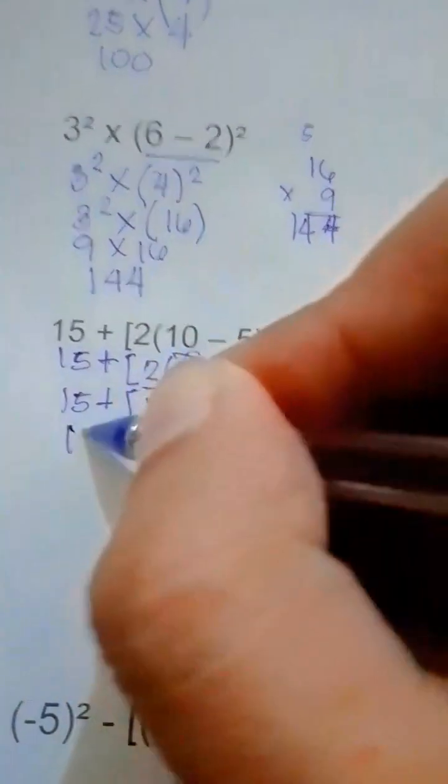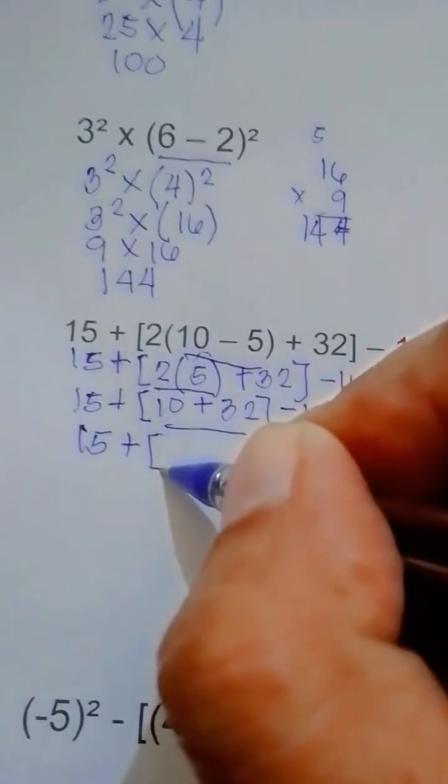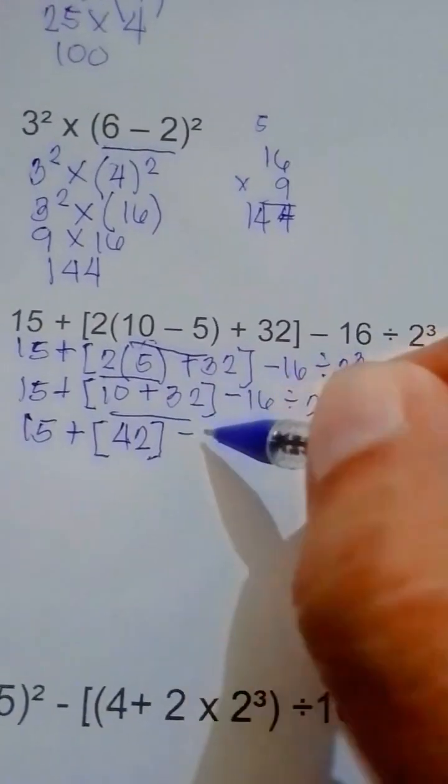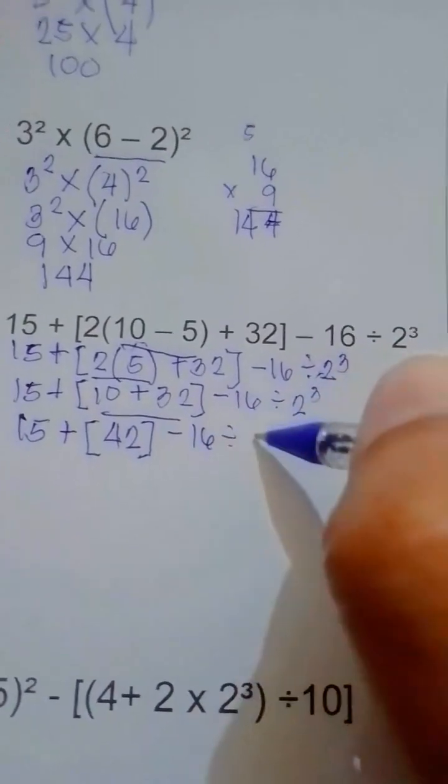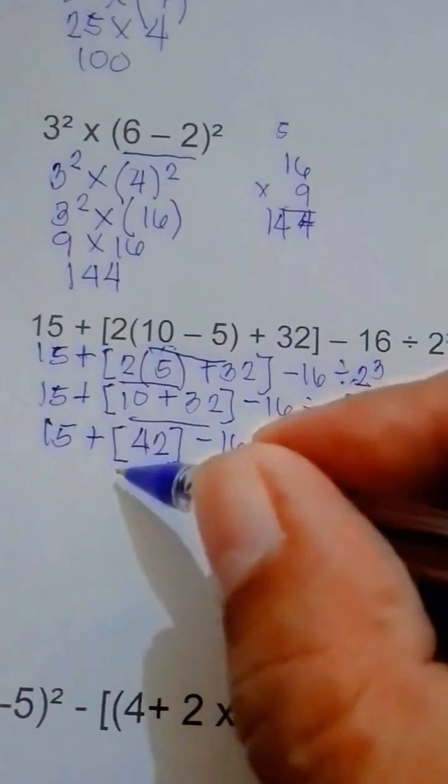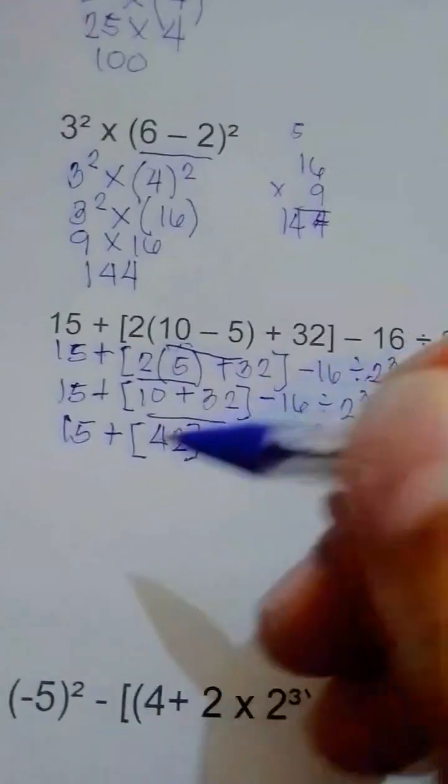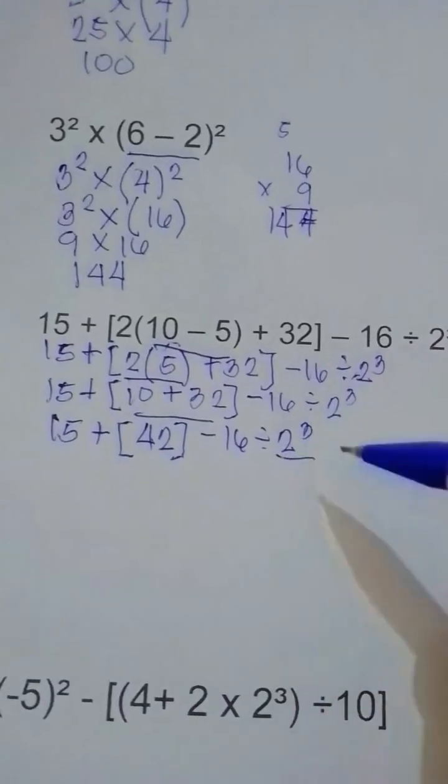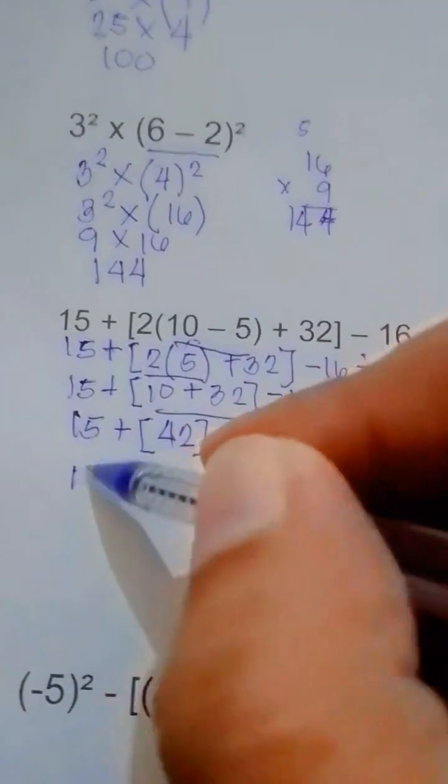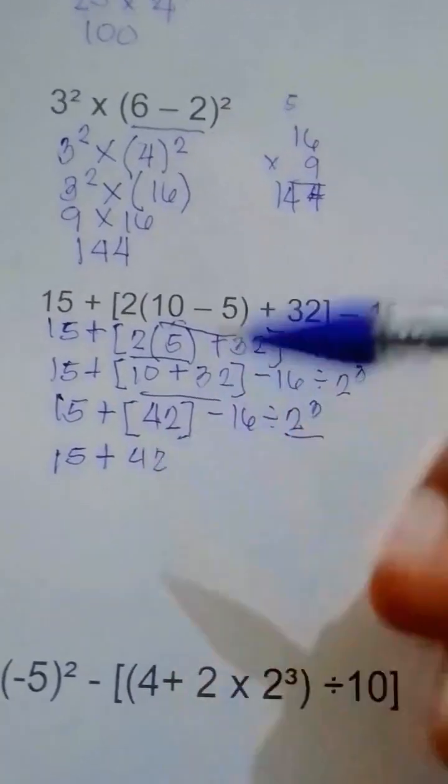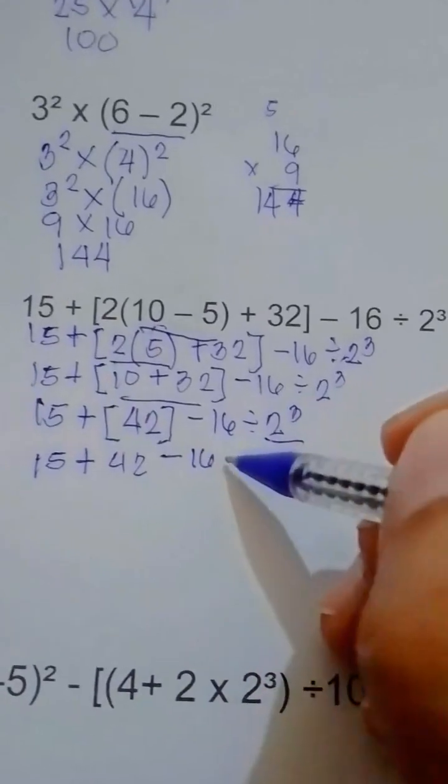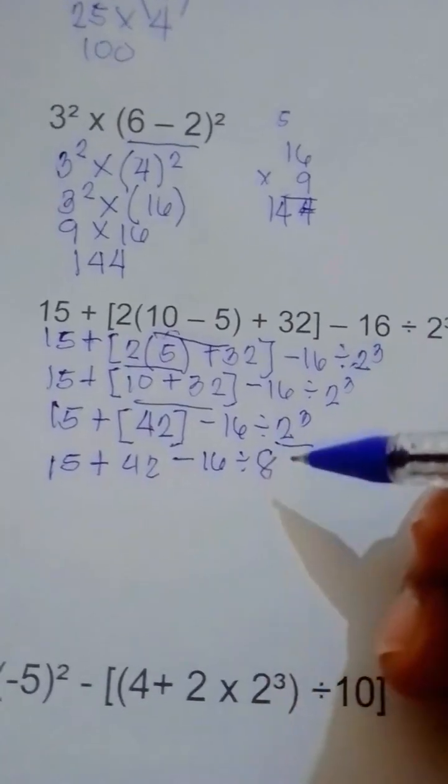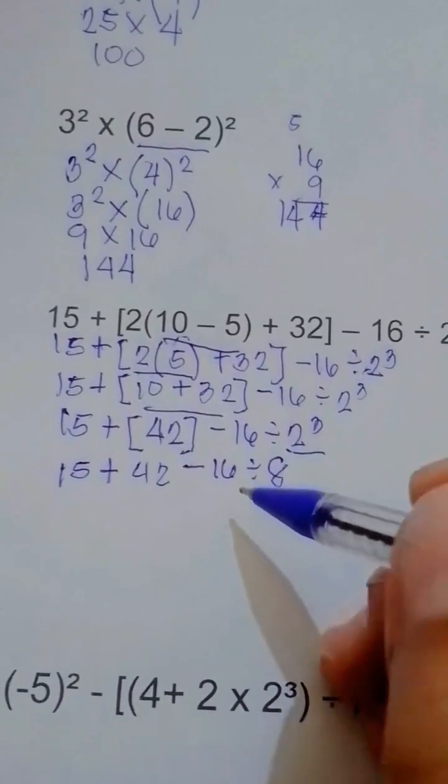So 15 plus, 10 plus 32 equals 42. So 42 minus 16 divided by, 2 to the third power. Next is, copy 15 plus 42 minus 16 divided by 2 raised to the power of 3 equals 8. 2 times 2 times 2 equals 8.